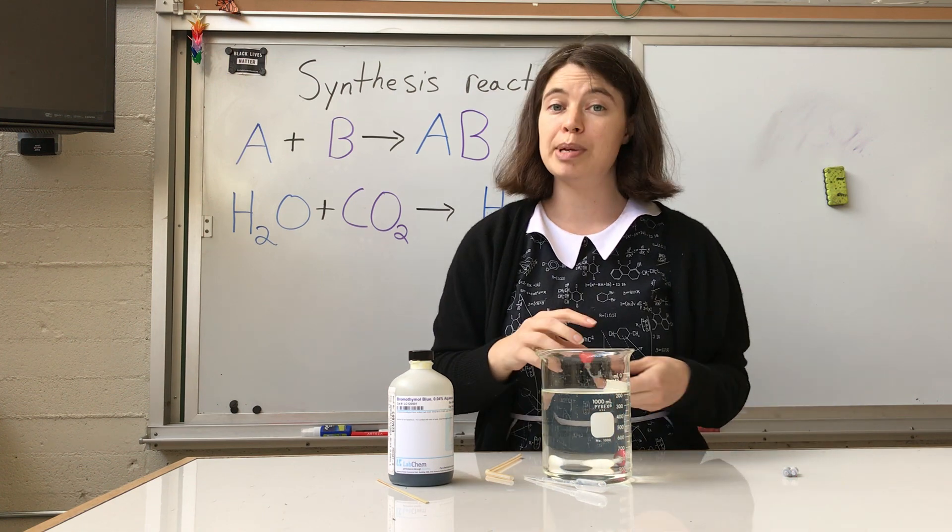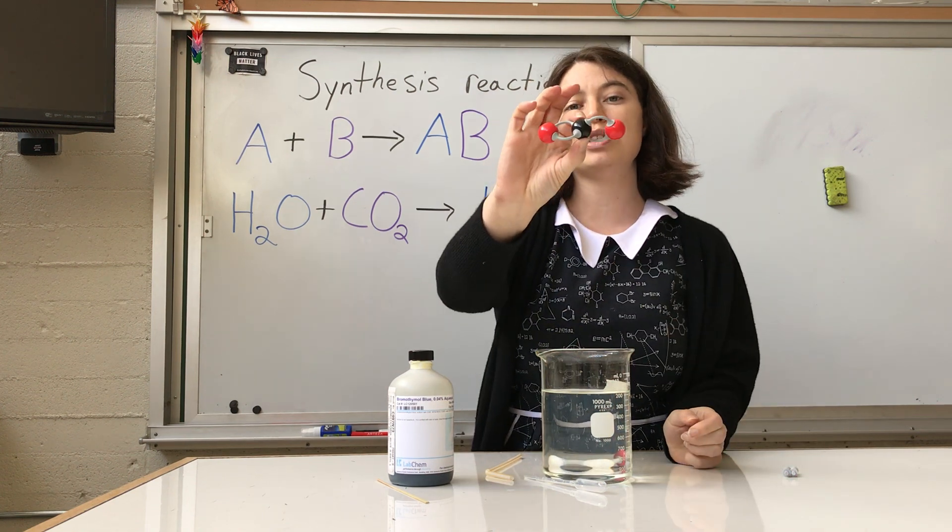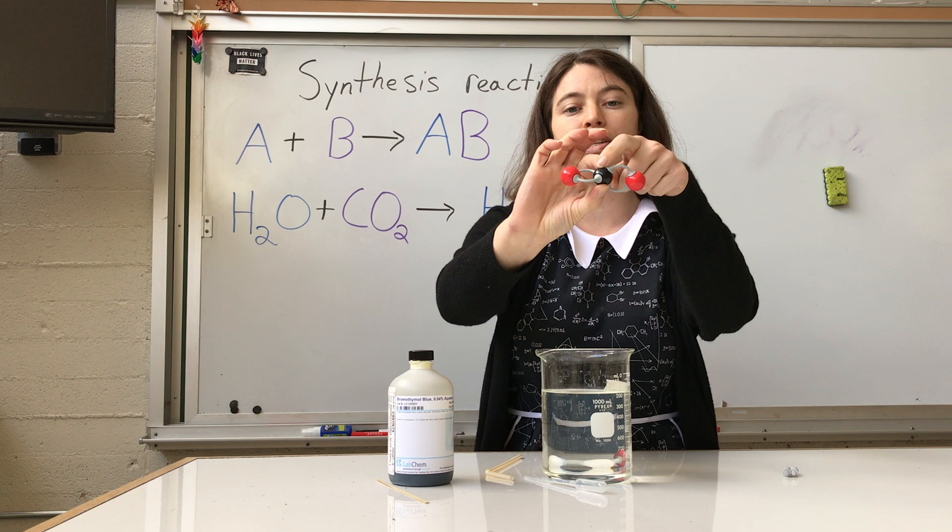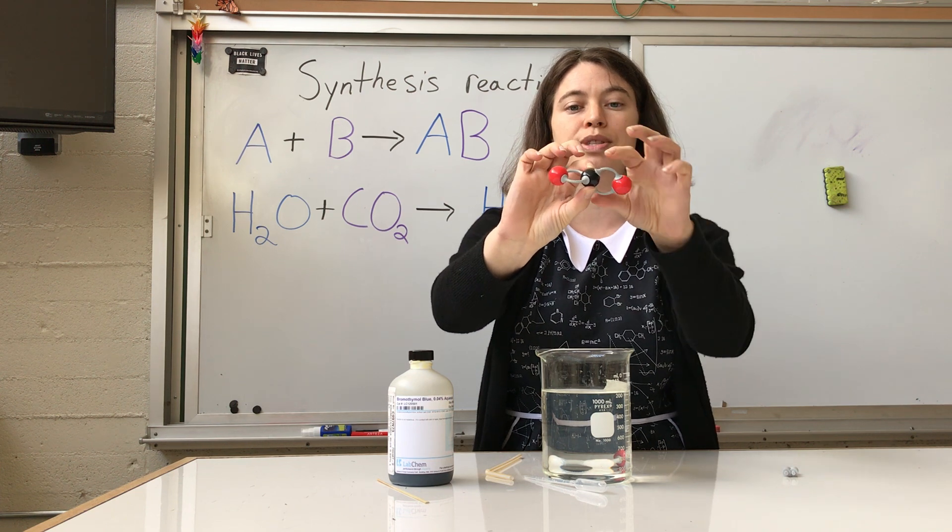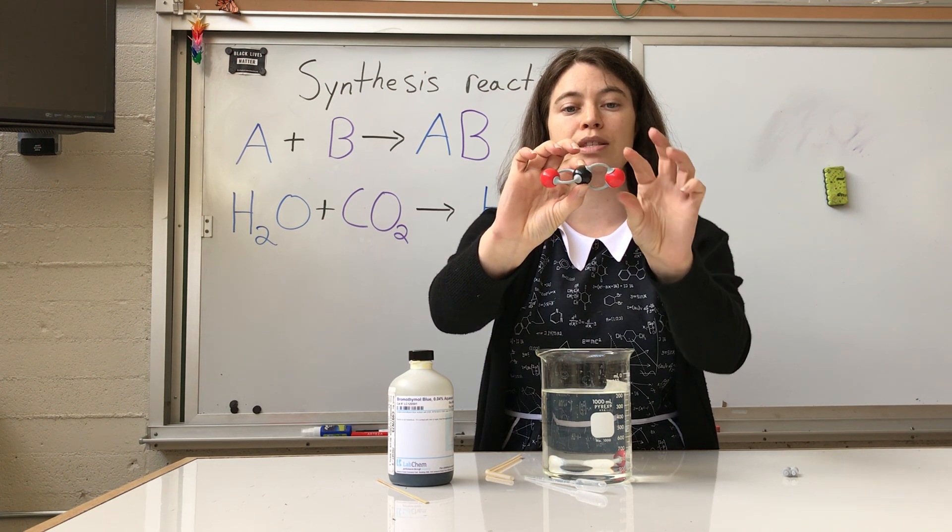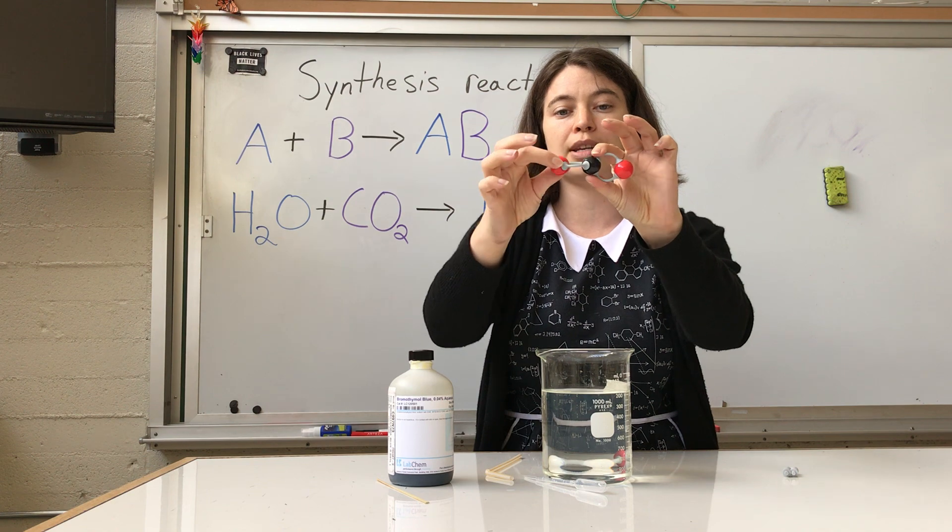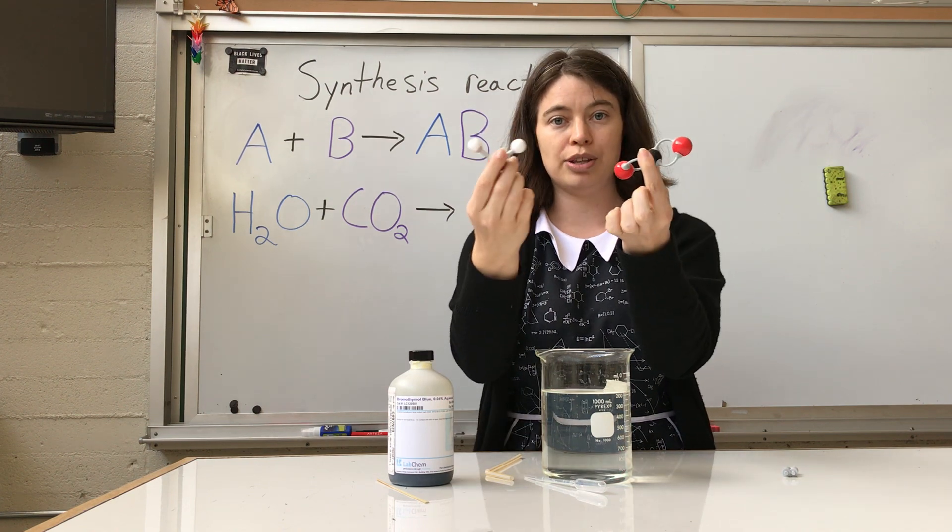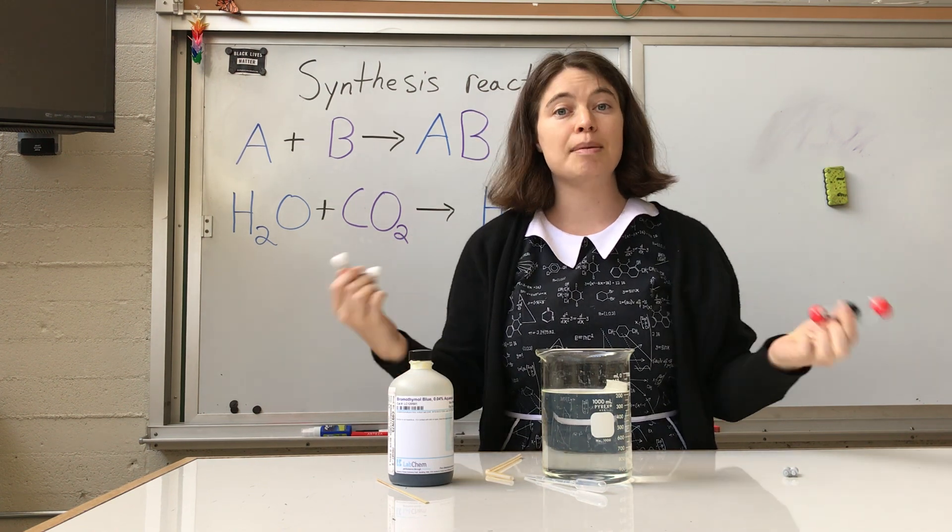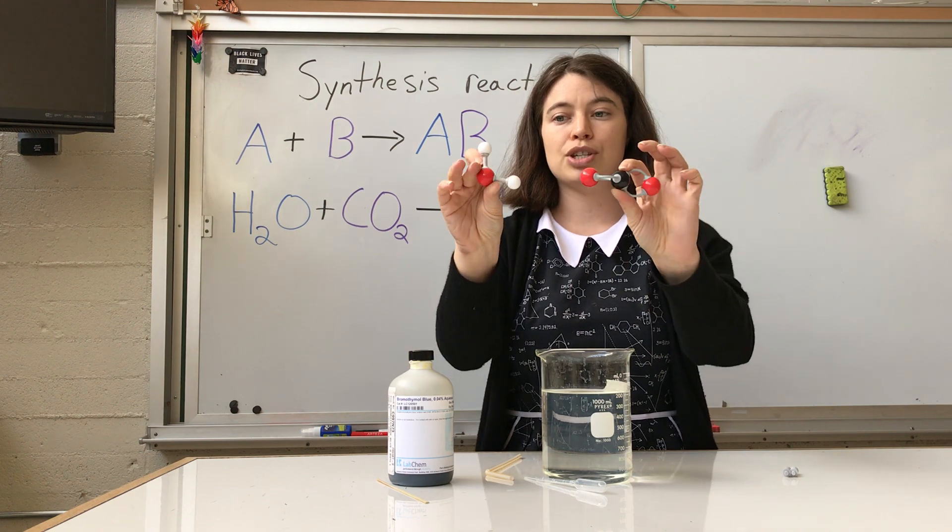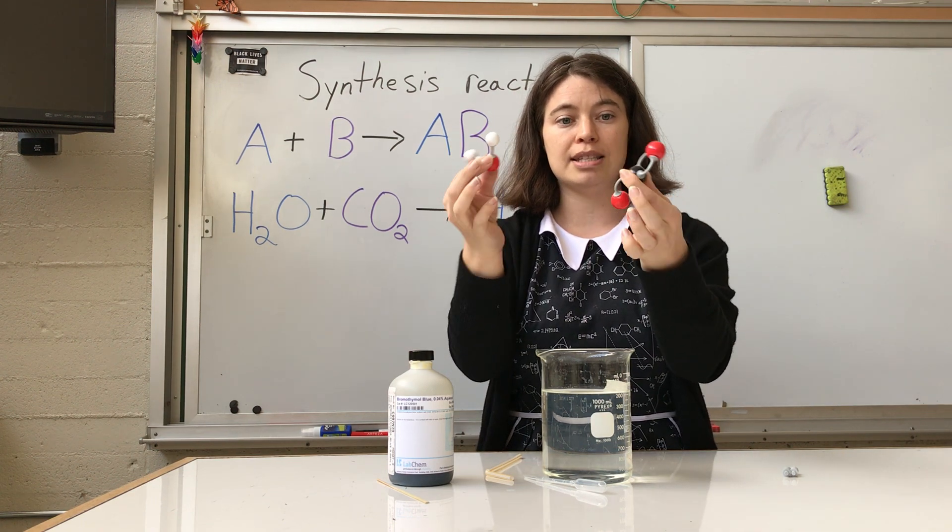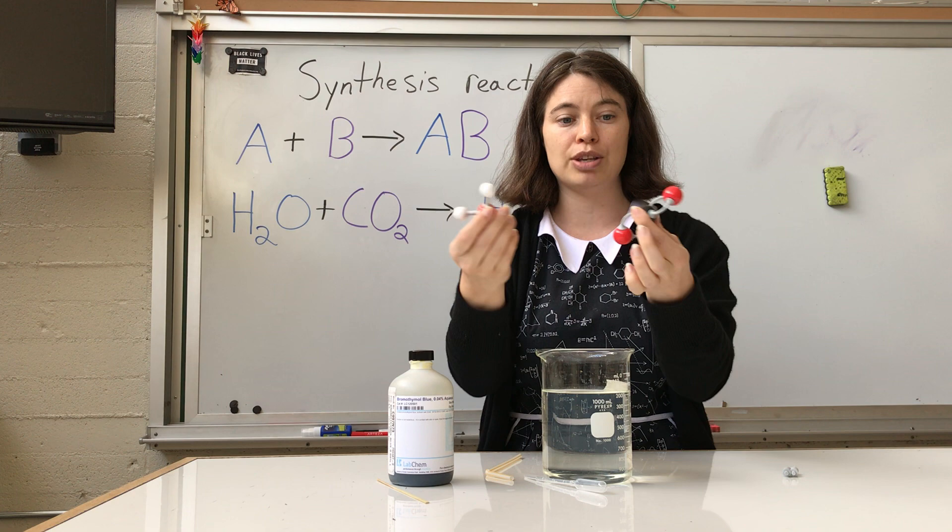And I have a carbon dioxide molecule here. This is carbon dioxide, it is made out of one carbon and two oxygens. You can see there are double bonds holding the oxygens onto the carbon. And from these two molecules, we are going to assemble something bigger.